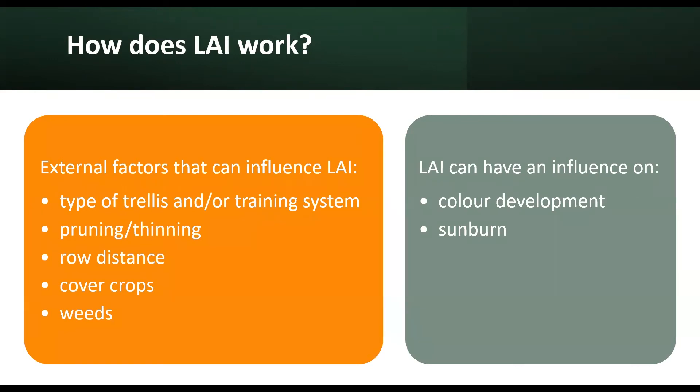If the canopy is too dense, meaning it has a high LAI value, less light will be available for colour development. Too sparse a canopy can mean too much direct exposure, which would lead to sunburn. Therefore, LAI can advise your pruning intensity, especially summer pruning, and historical data can help you determine the optimal LAI value for your production unit.